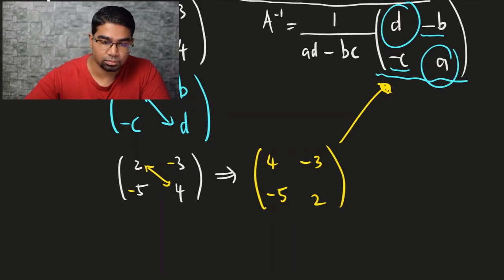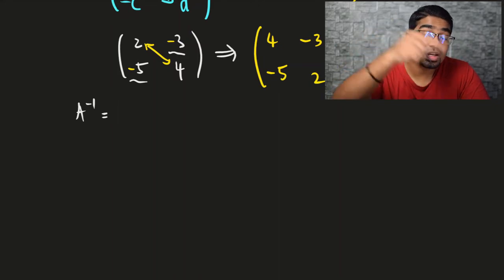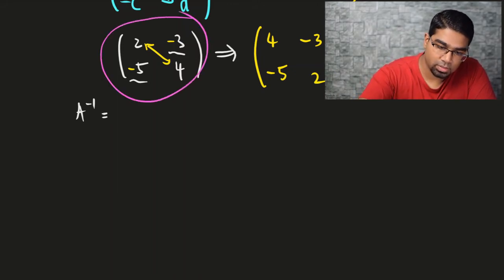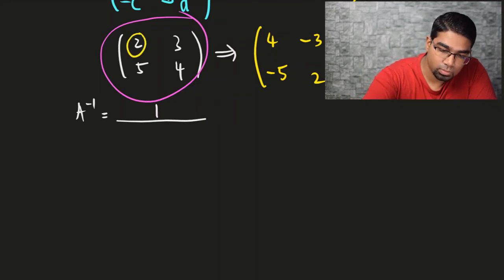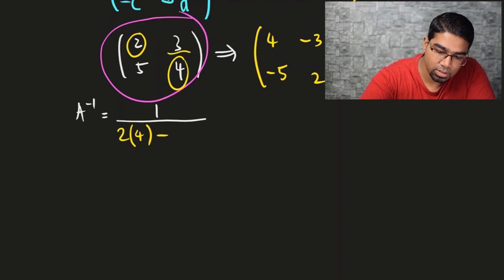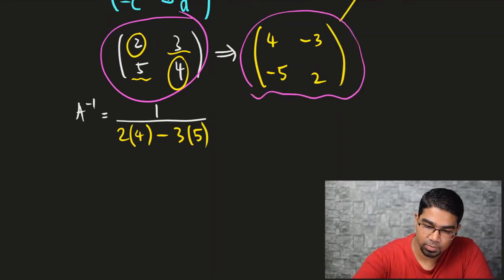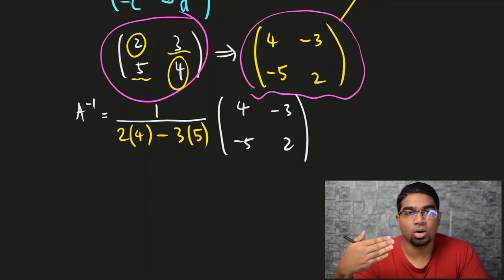1 over (AD minus BC) is simply — now we can do the inverse. When we do 1 over (AD minus BC), we are referring to the original matrix, not after we've done the conversion. So we have to look at the original matrix. This is 1 divided by A times D: so A is 2, 2 times 4 is 8, minus B times C: B is 3 and C is 5, so 3 times 5. So this is 1 over (AD minus BC). Then we insert this here to get the full A inverse: [4, -3, -5, 2] — and this is how we get the inverse matrix of the 2 by 2 matrix.